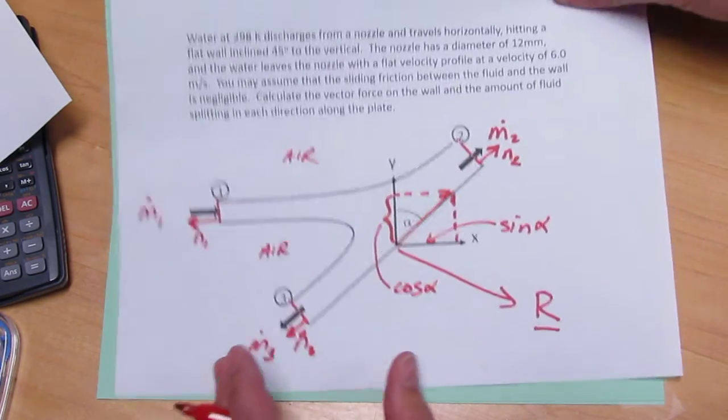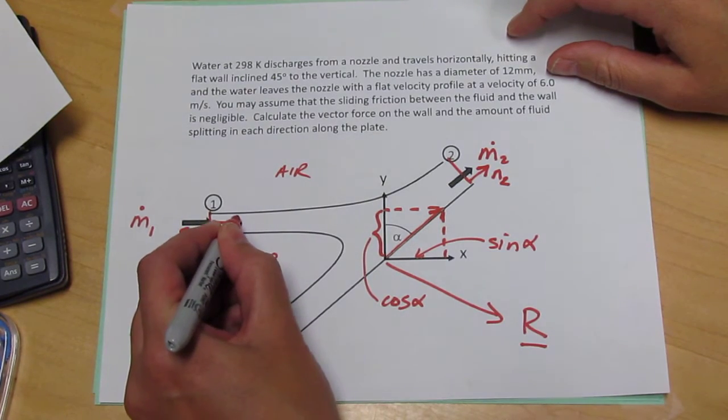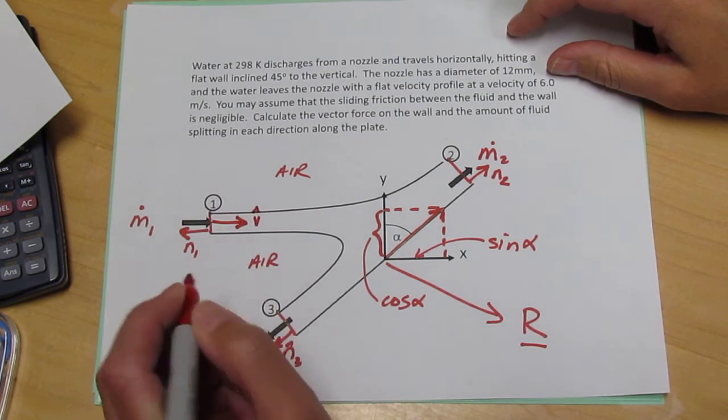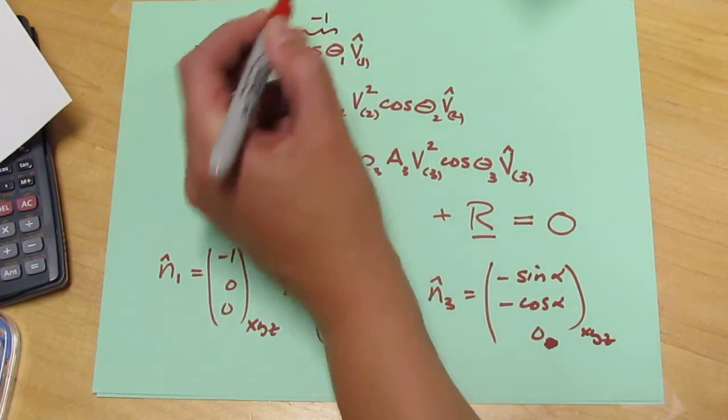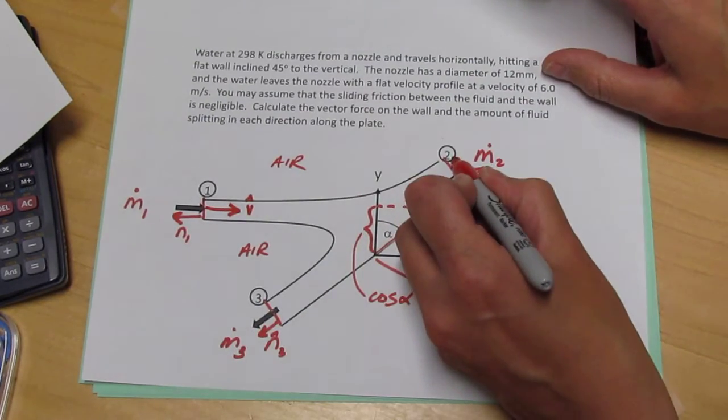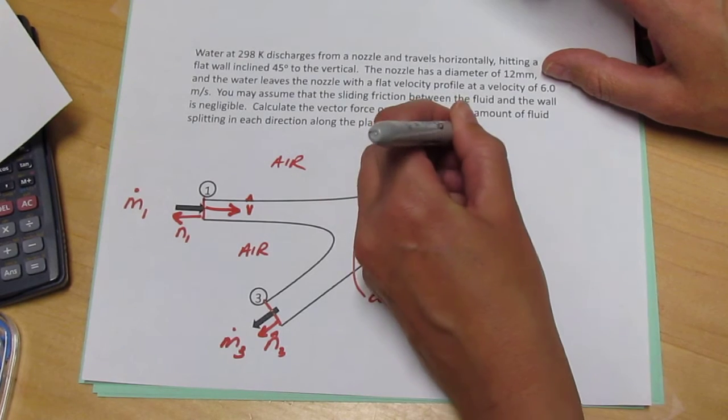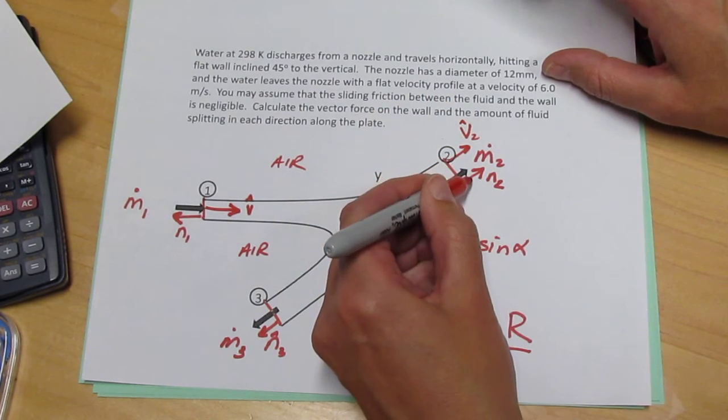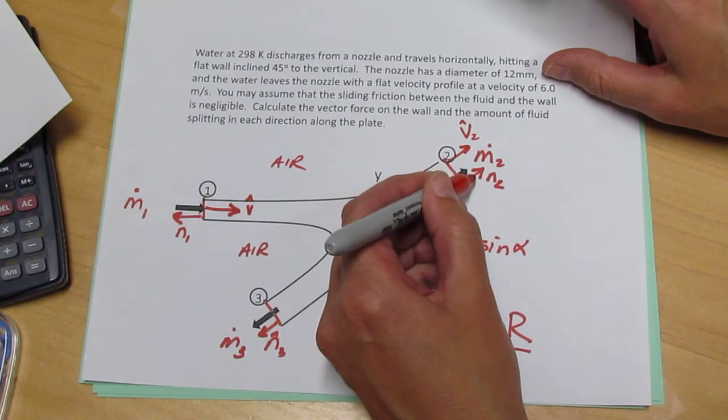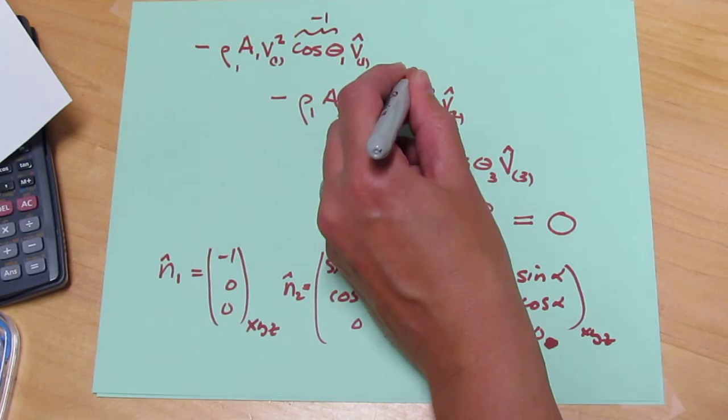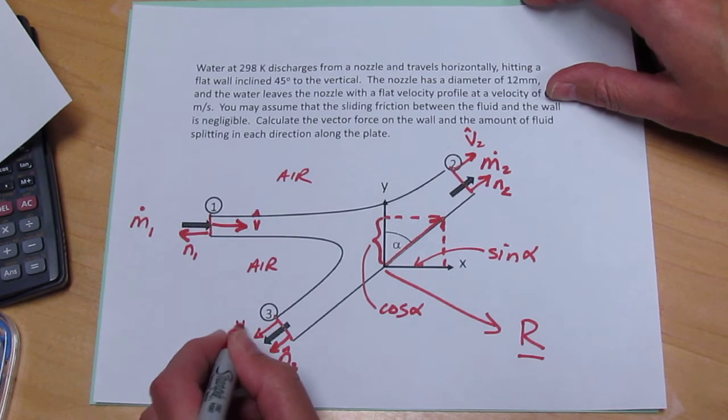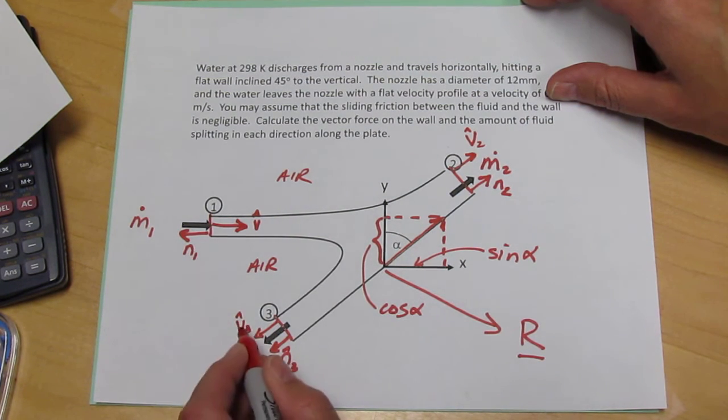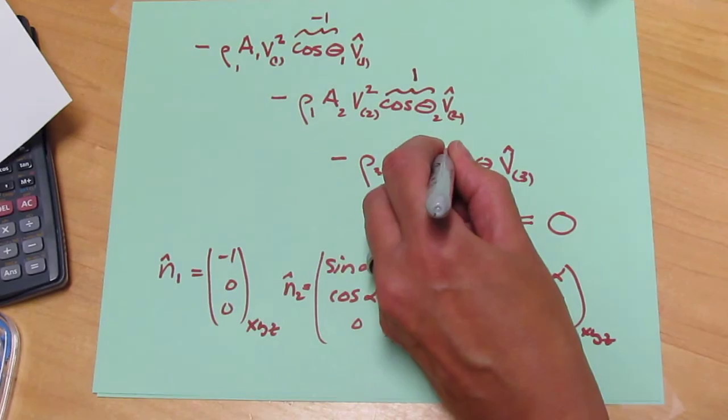So the angles theta we need as well. The angle theta is the angle between the unit vector in the direction of the velocity at the one surface. So the angle between these two is 180. So cosine of 180 is minus 1. The angle theta is the angle between the unit normal vector in the direction of the velocity at the two surface and the outwardly pointing unit normal at the two surface, which is 0. And cosine of 0 is 1. And theta 3 is the angle between the unit vector at the three surface in the direction of velocity and the outwardly pointing unit normal N3. That's also 0. So cosine theta 3 is also 1.